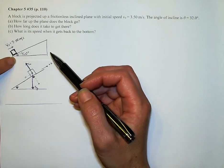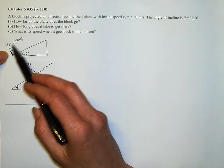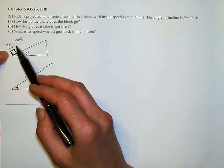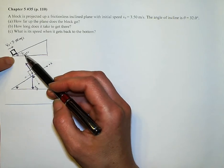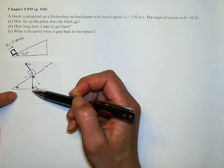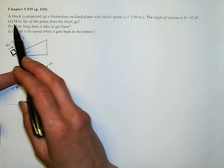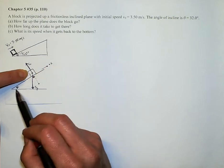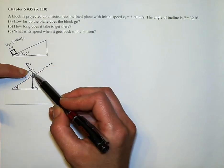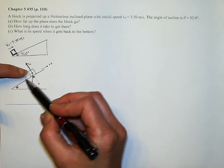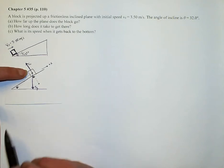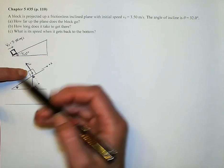I've drawn our picture here showing our initial velocity of 3.5 meters per second and our angle of 32 degrees. But then I've redrawn the picture for our instant that we are coming to rest because how far up the plane does the block go? It's going to go as far as it can before it goes to a velocity of zero and then turns around and goes back down again.